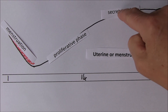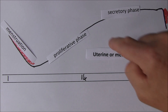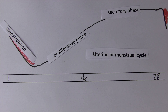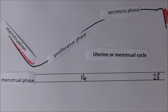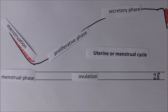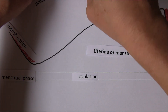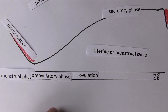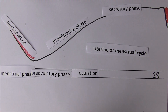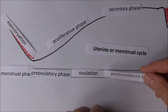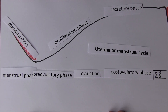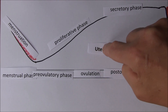The secretory phase secretes nutrients which are going to be useful if any fertilised embryo comes along to implant itself in the nicely prepared functional layer of the endometrium. After the menstrual phase, we have the pre-ovulatory phase before day 14, and after ovulation the next part is called the post-ovulatory phase. These are the changes in the endometrium — that's why we call this the uterine or menstrual cycle.